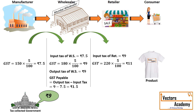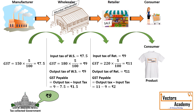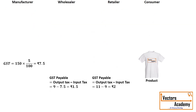When the retailer purchases from the wholesaler, he has paid a tax of 9 rupees — that is his input tax. When he sells the product to the consumer, the output tax is 11 rupees, so the GST payable is 2 rupees, which again goes to the government. This is how GST is paid at each stage of the supply chain.